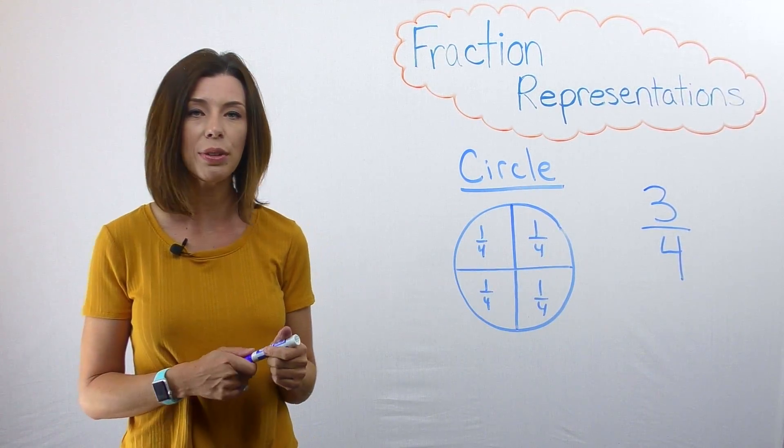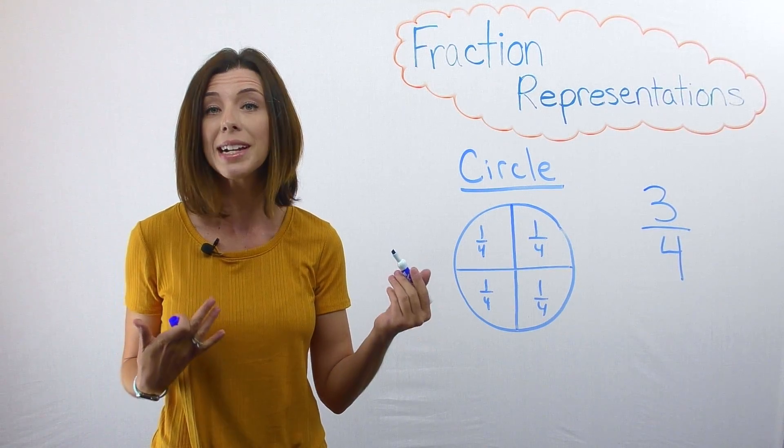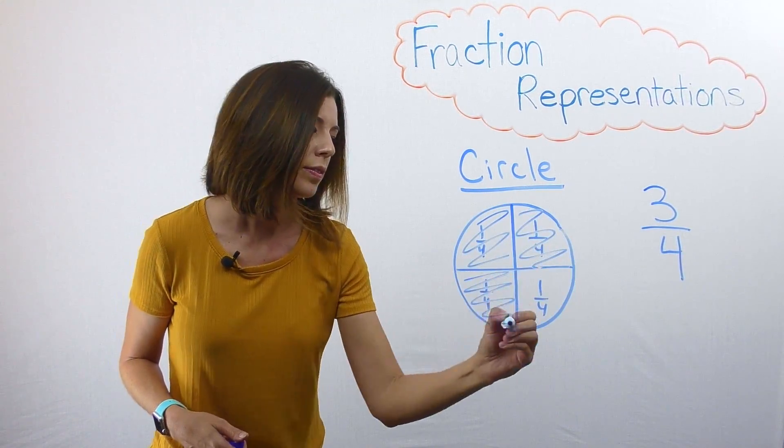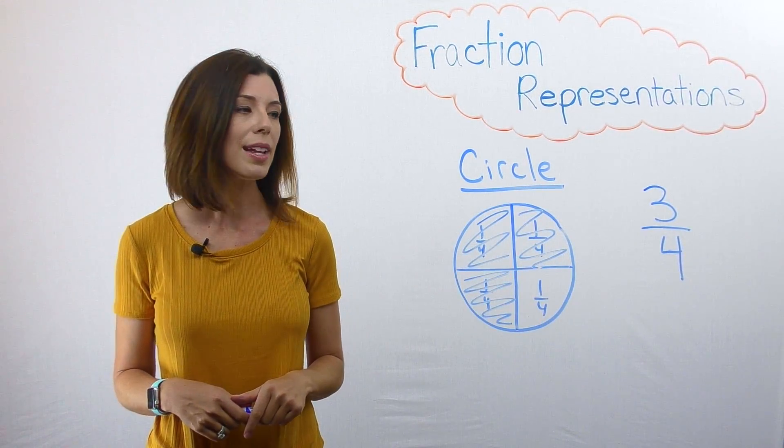So if I'm going to shade in 3/4, I just need to shade 3 copies of 1/4. That's how we would use a circle to represent that.